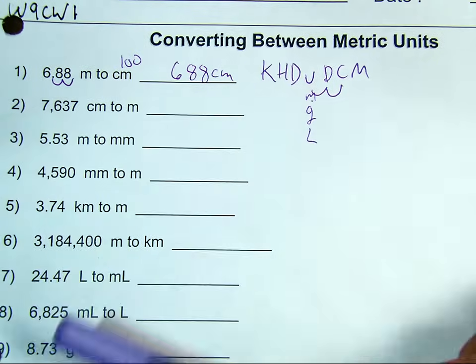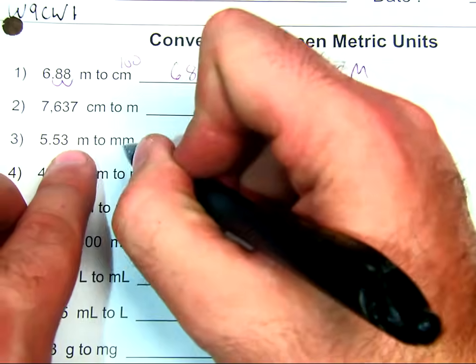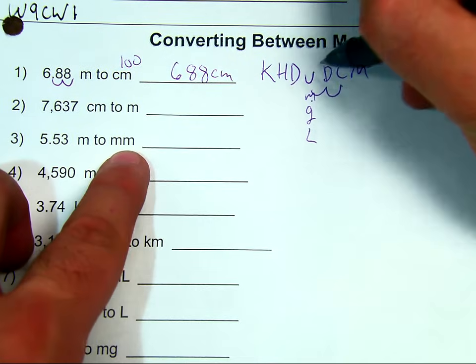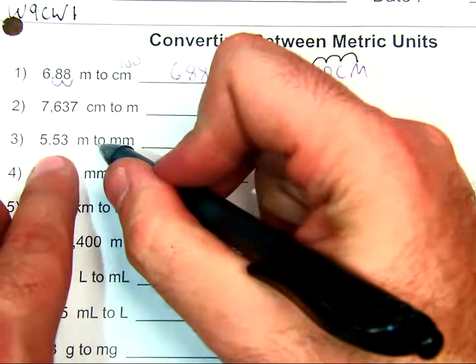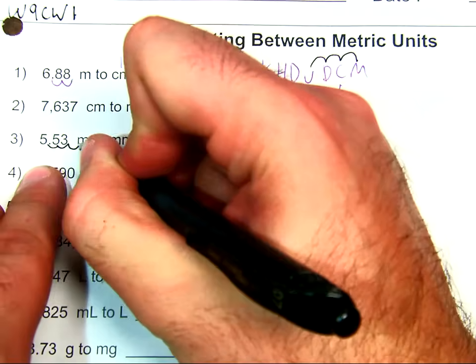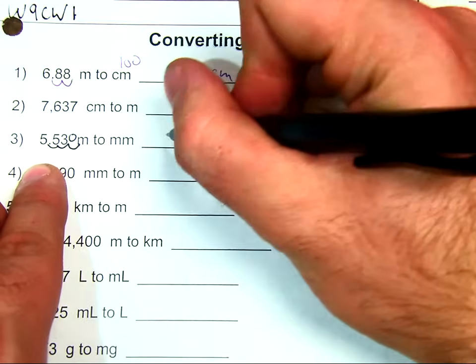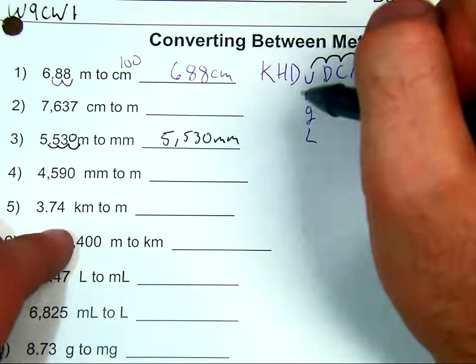My next one, let's do number three, meters to millimeters. I'm going from my unit, my M, to my millimeter. I'm going one, two, three spaces to the right. So, I'm going to go one, two, three spaces to the right. Now, I ran out of space, so I have to add a placeholder zero. 5,530 millimeters.